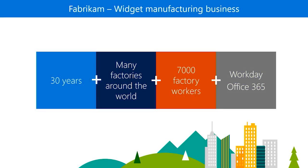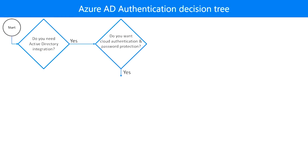Next up is Fabricam. They're a widget manufacturing company and have been making widgets over the last 30 years. They have more than 7,000 factory workers who sign into Active Directory every day to do their jobs. Fabricam has decided to deploy Workday, an HR cloud-based application to let factory workers handle their payroll online and also to migrate to Office 365 so that these factory workers can actually receive their work schedules over email. It is important that Fabricam's factory workers use the same usernames and passwords that they use today with Active Directory also to sign into Workday and Office 365. It lets them stay productive, and also Fabricam's help desk costs are kept under control. In addition, Fabricam doesn't have a large IT department, so they need the simplest solution possible, which means the lowest on-prem footprint and also low operating costs.